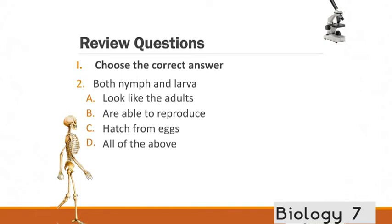Question 2. Both nymph and larvae A. Look like adults. B. Are able to reproduce. C. Hatch from eggs. Or D. All of the above. And the correct answer is C. Hatch from eggs.